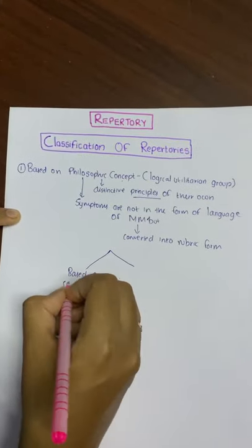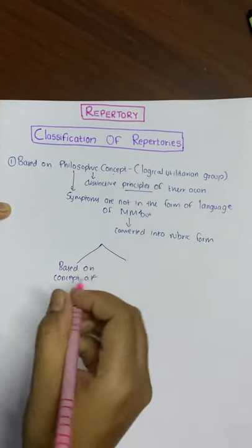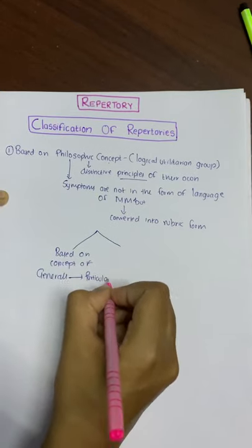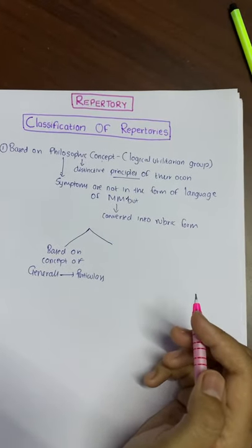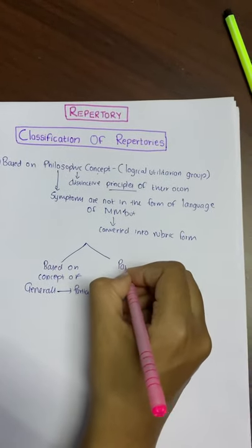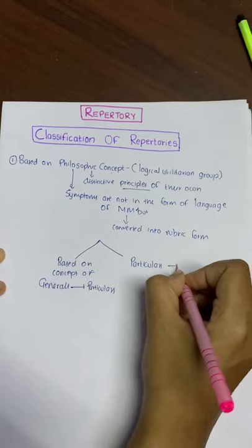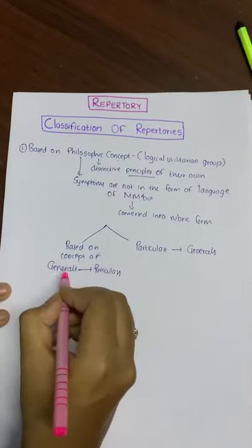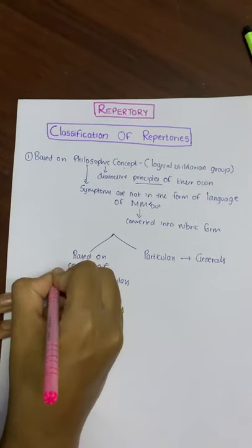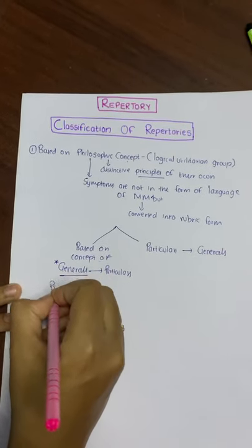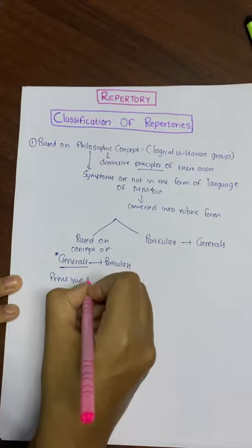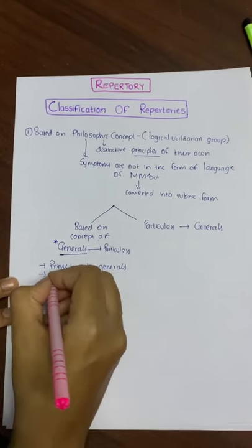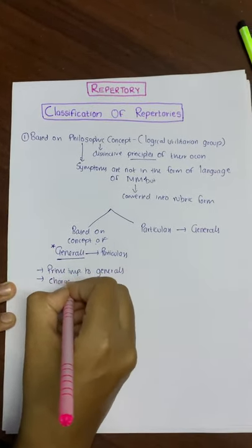The first sub-group is based on the concept of generals to particulars, where the generals are given prime importance, followed by characteristic particulars.